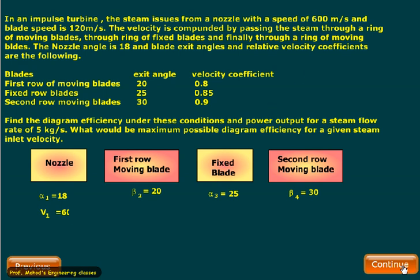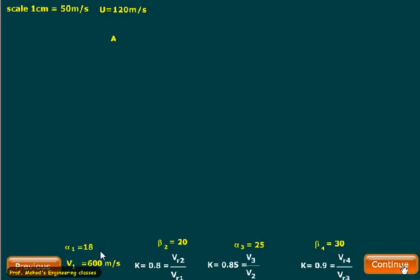The inlet velocity is given as V1 equal to 600 and K is equal to 0.8 for this one, Vr2 by Vr1. When it comes from here the exit velocity is V2 and inlet velocity is V3, so that is reduced by 0.85 times. When we are in the moving blade, K is defined as Vr4 by Vr3 that equals 0.9. The value of U is given as 120. Our scale is 1 cm equals 50 meters per second.